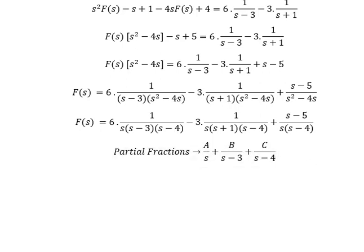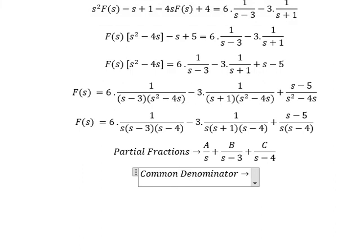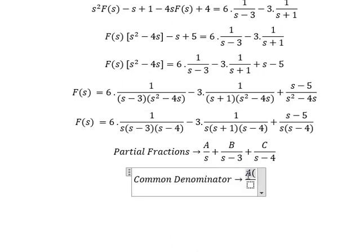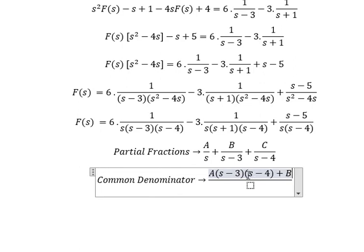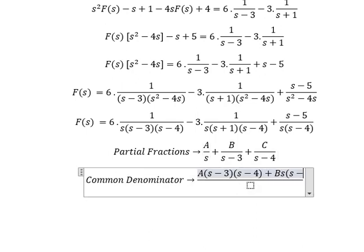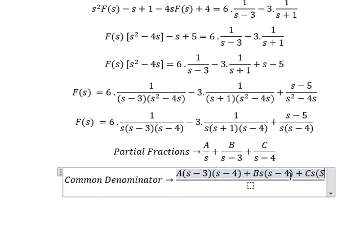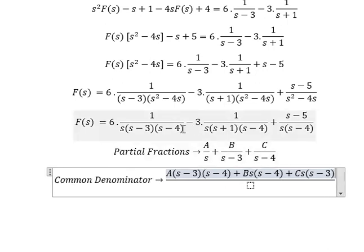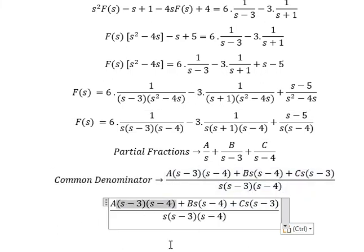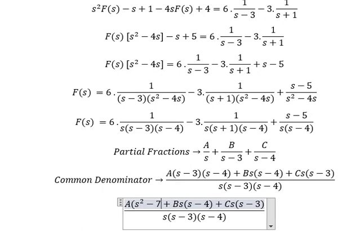We need to find the common denominator. This one is missing s minus three and s minus four, so capital A is multiplied by s minus three times s minus four. This one is missing s and s minus four. And the last one — we need to expand this one and this one too.